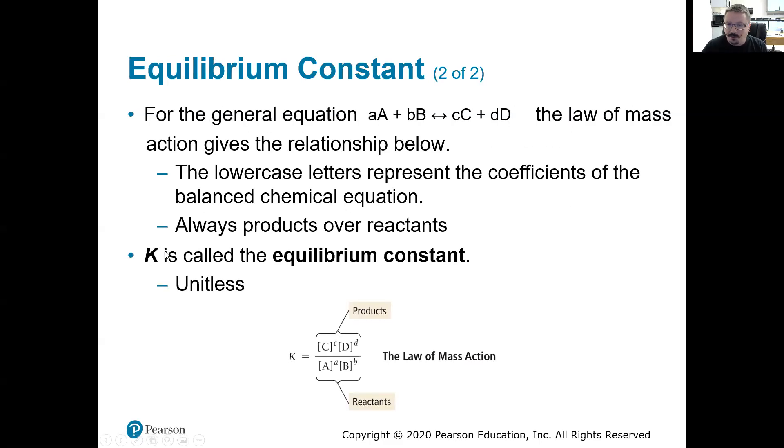Really simple. Capital K is your equilibrium constant. You're going to have some basic reaction with reactants and products. It should be a reversible reaction that can proceed in the forward and reverse direction. To set that up, you're going to set up products over reactants, or more specifically the concentration of the products over the concentration of the reactants.